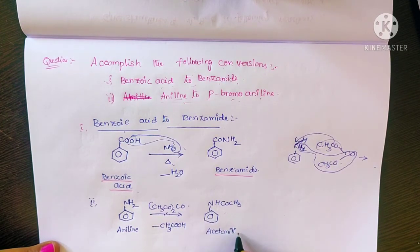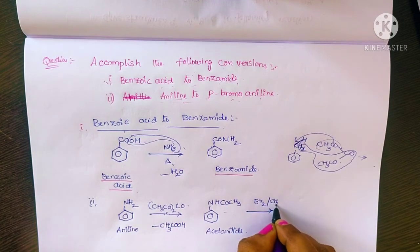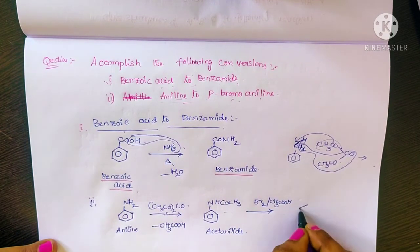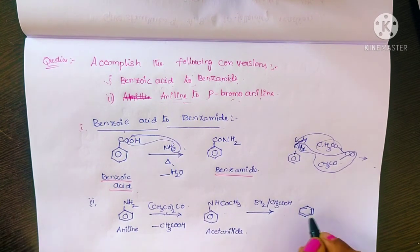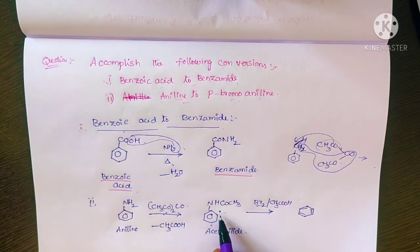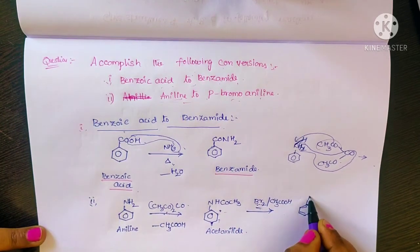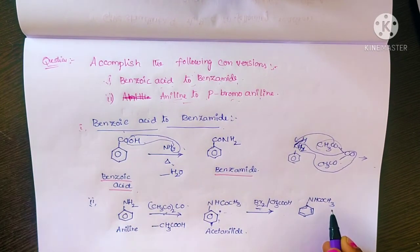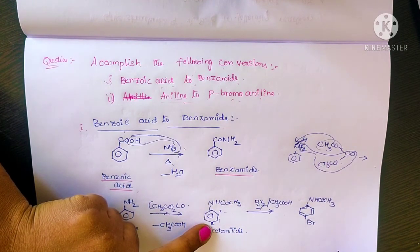Acetanilide then reacts with bromine in the presence of acetic acid to produce para-bromoacetanilide. The bromine atom attaches to the para position in the acetanilide. The para carbon atom contains a hydrogen with high reactivity, so the bromine attaches there and HBr is removed.